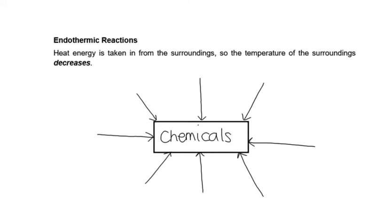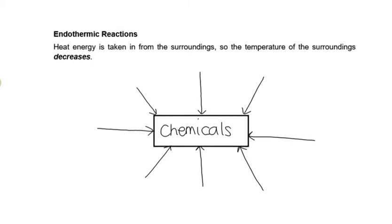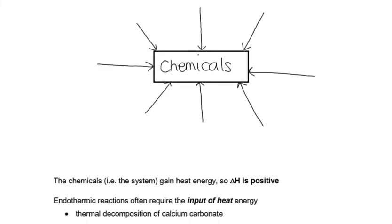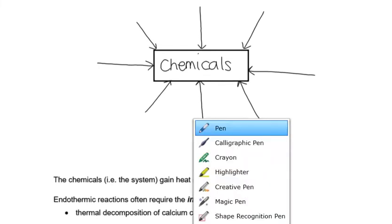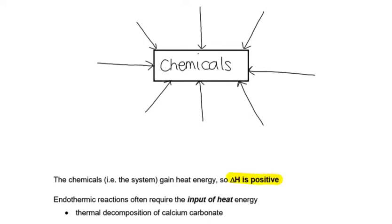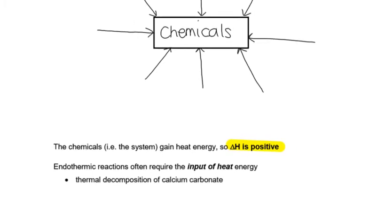This is going to take in energy from the surroundings. So the surroundings are going to get colder because they're having their energy taken away from them. The chemicals are going to get more energy. They're not going to turn it into heat - they're going to take it in and store it as chemical potential energy. So the delta H is going to be positive because they're going to gain energy.